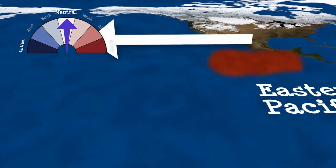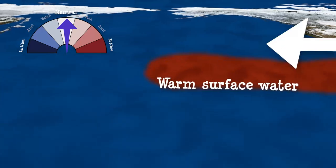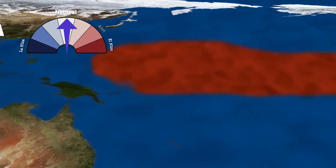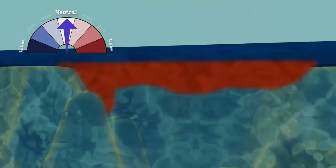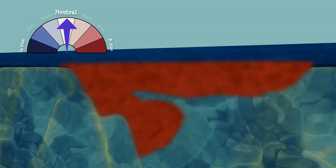Here, trade winds blowing from east to west push warm surface waters across the planet, piling up warm water in the western Pacific.